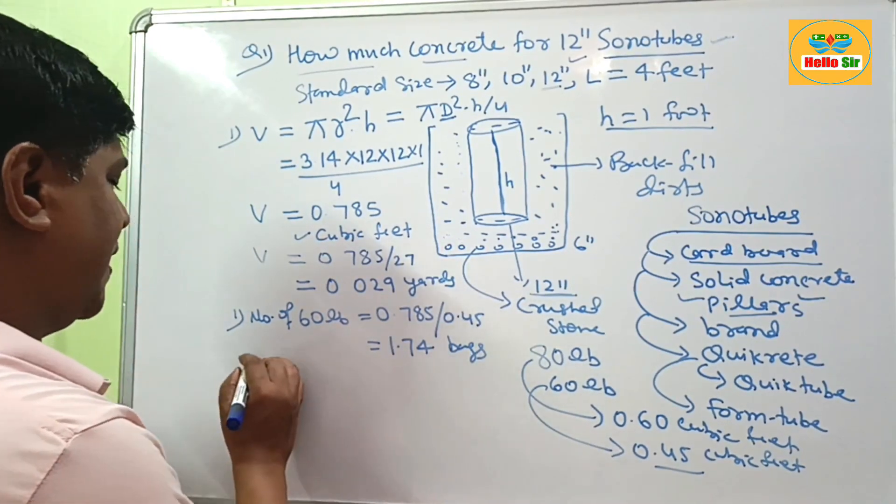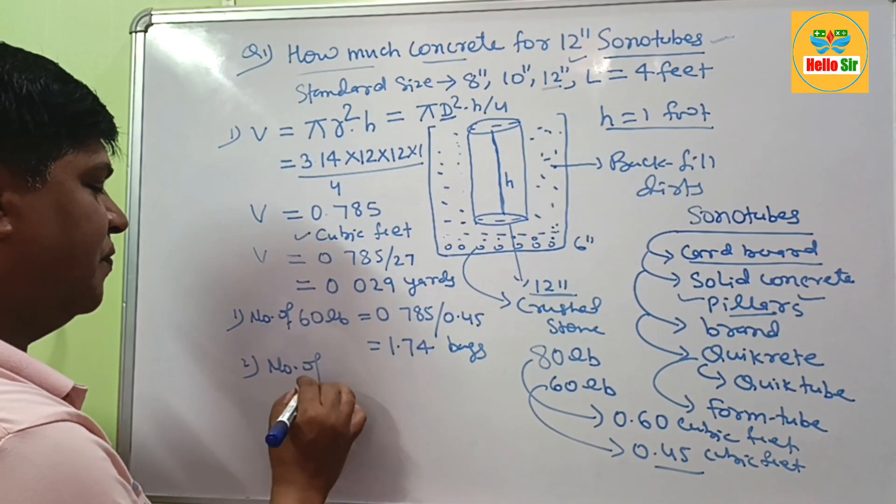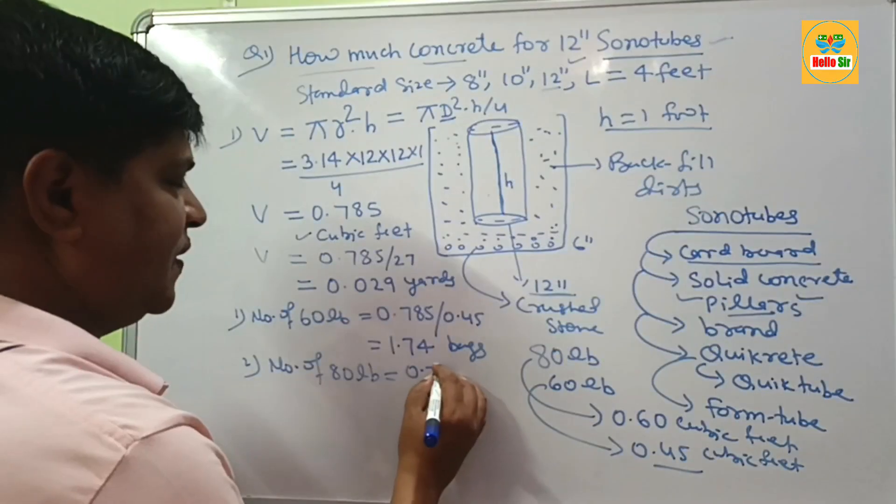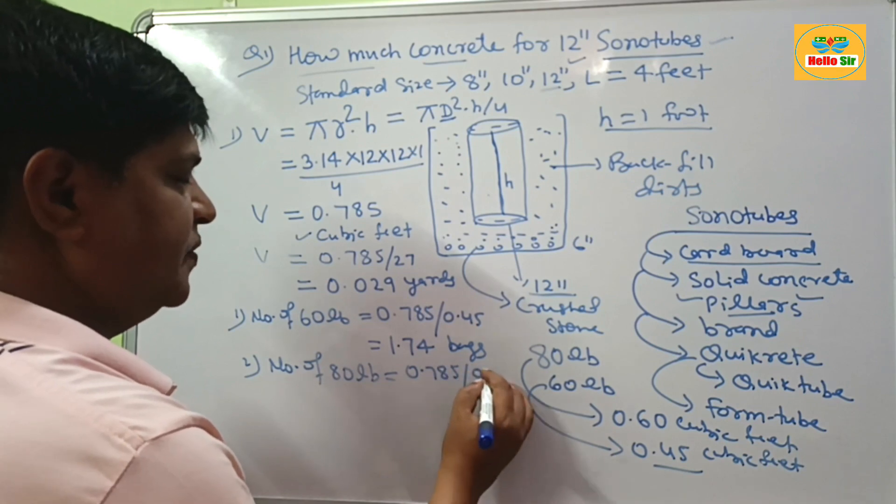And if you want to calculate number of 80 lb bags, 0.785 divided by 0.6, this will come to about 1.31 bags.